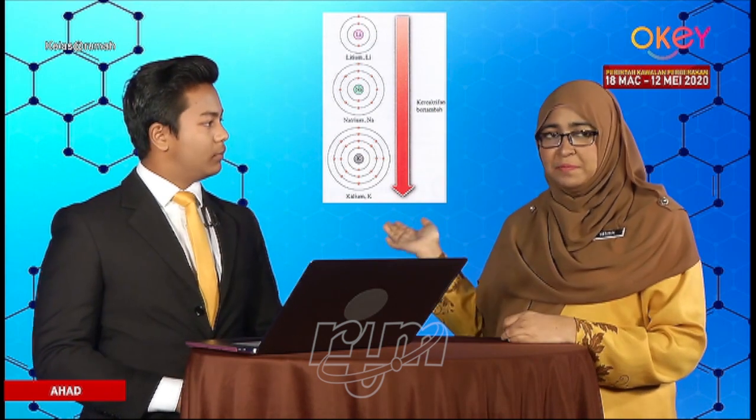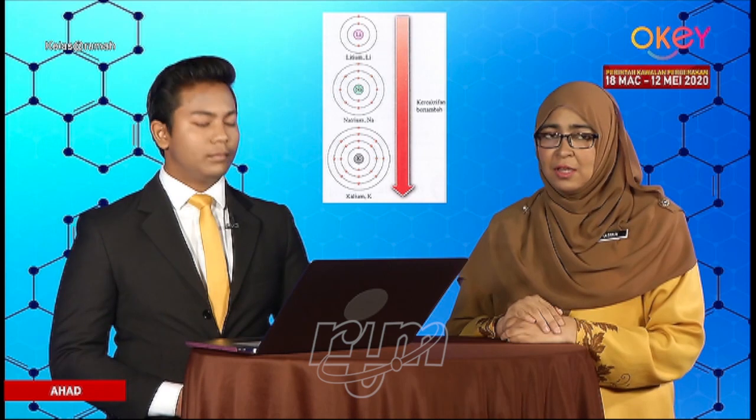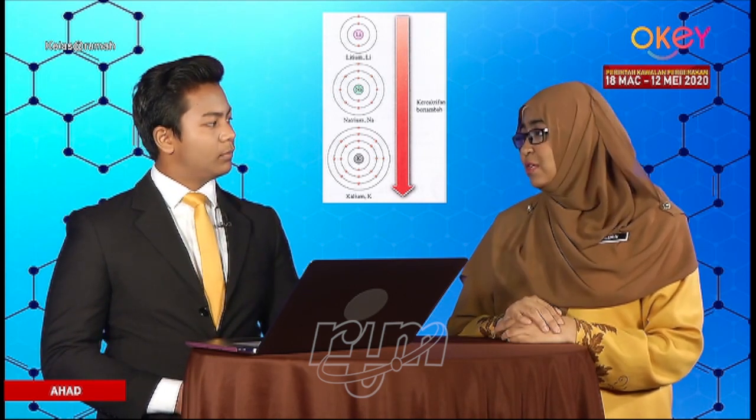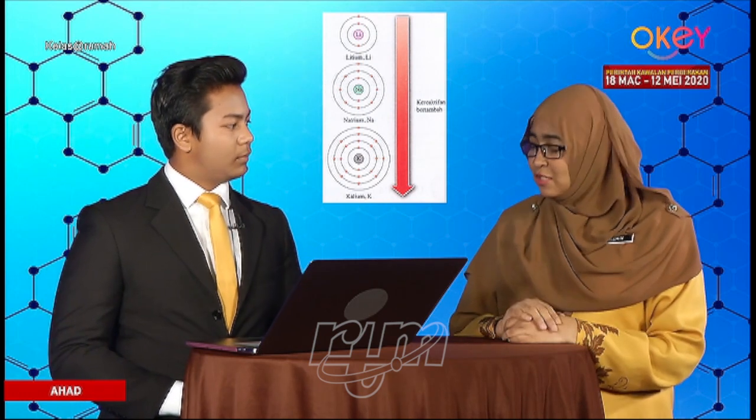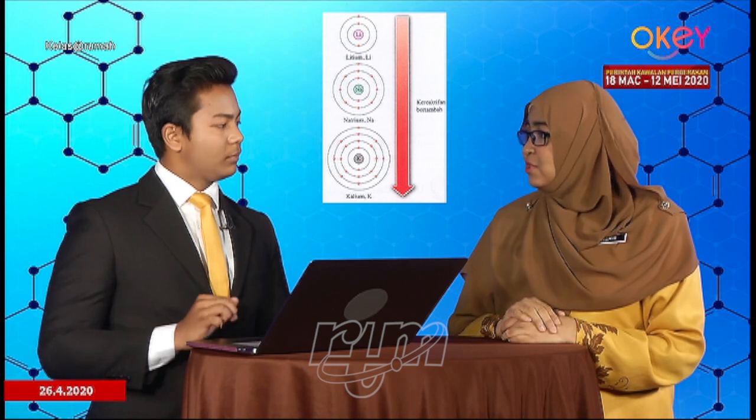Going down group 1, the number of shells filled with electrons increases, making the atomic size increase too. The position of valence electrons are further away from the nucleus, causing the forces of attraction between the nucleus and the valence electron to be weaker. So the valence electrons can be easily donated. As we go down the group, the reactivity of group 1 elements increases. Cikgu Yasmin's team has done research on the reactivity of group 1 elements with oxygen — let's watch the feed.